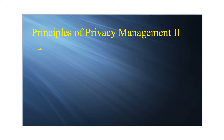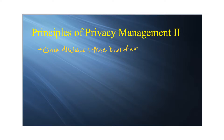Once a disclosure is made, to ensure privacy boundaries are regulated and synchronized regarding third-party access, a level of privacy rule coordination is necessary. There are three kinds of rules that apply once a disclosure has been made.